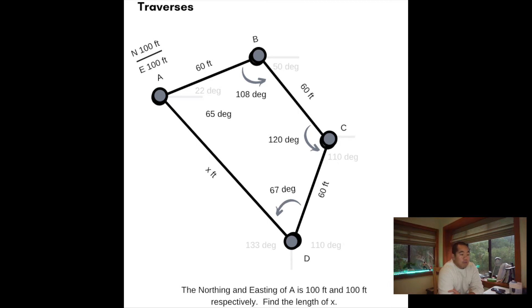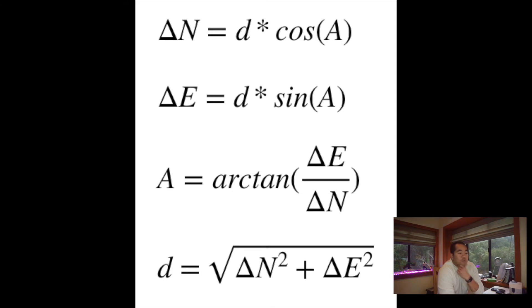What we want to do is go from point A all the way down to point D because we actually don't know what the length of x is right here. Looking at these four equations, we know that we can find the distance between two points using the change in the northing and the change in the easting. What we aim to do is find the northing and easting of D. We're given the distances between points A and B and points B and C and point C and D, so we're going to try to find the distance in between all of them and use these equations to solve for the coordinates of point D, basically find the northing and easting.